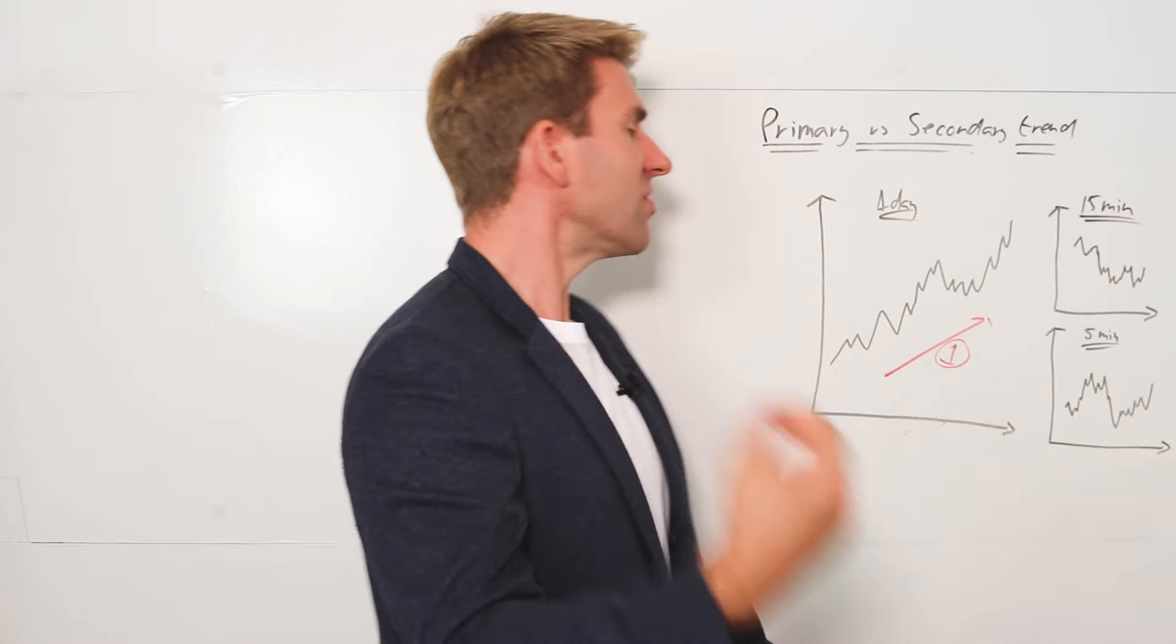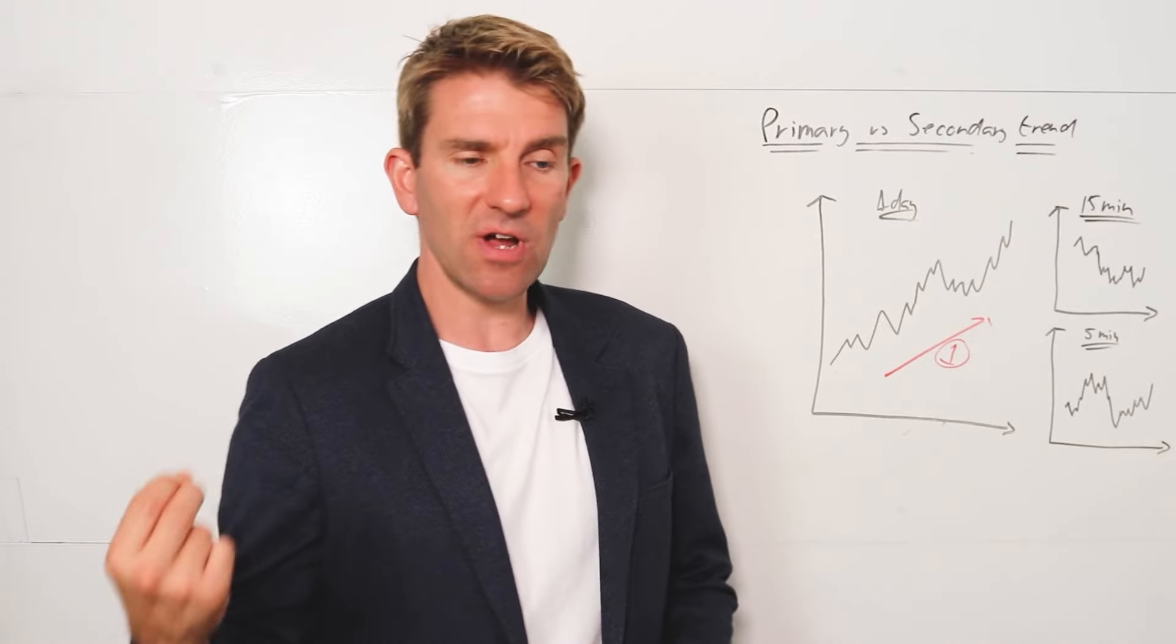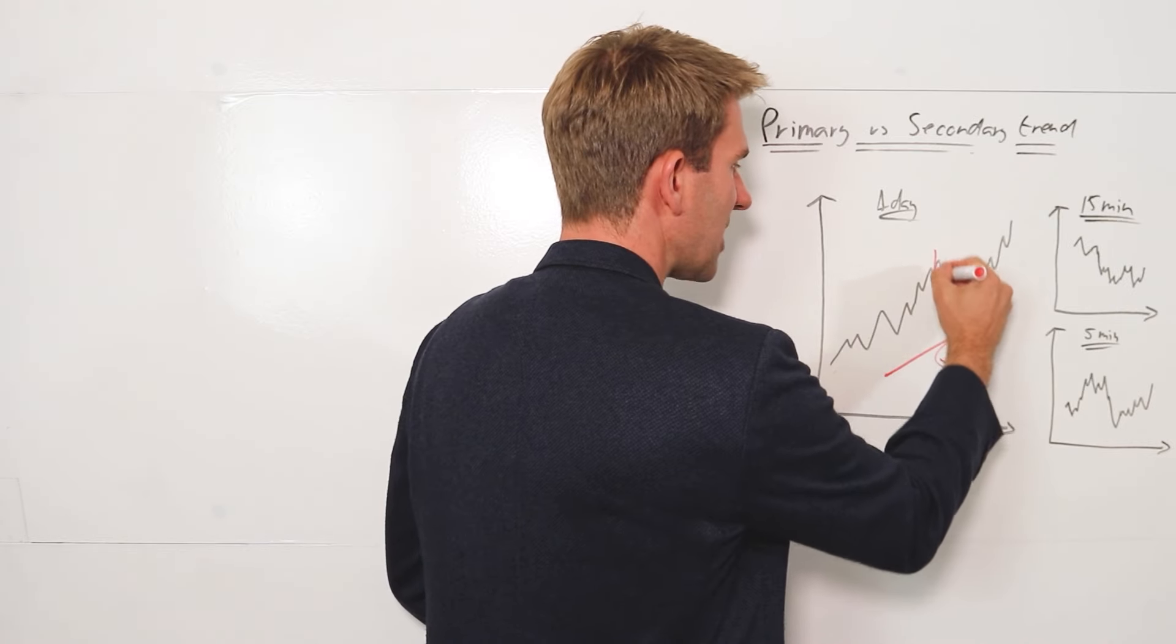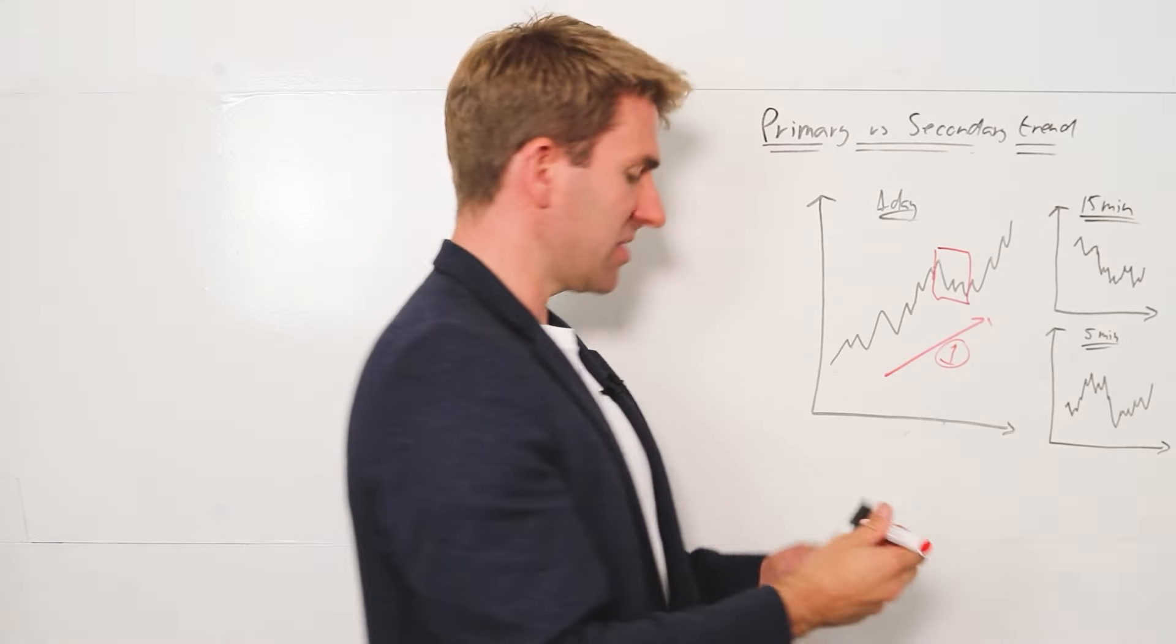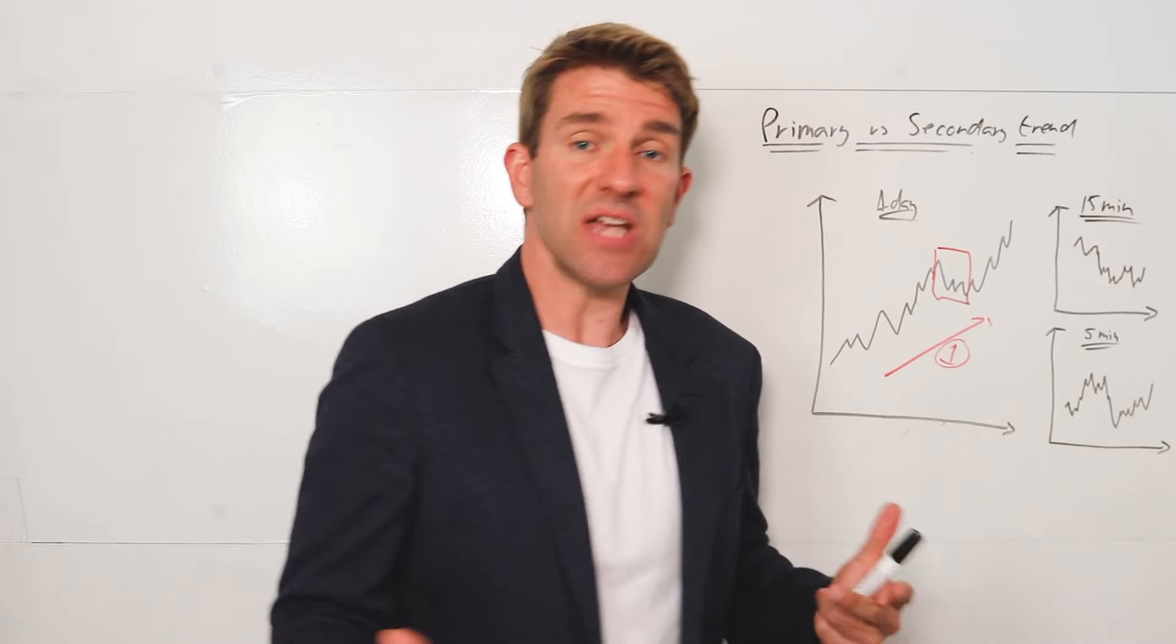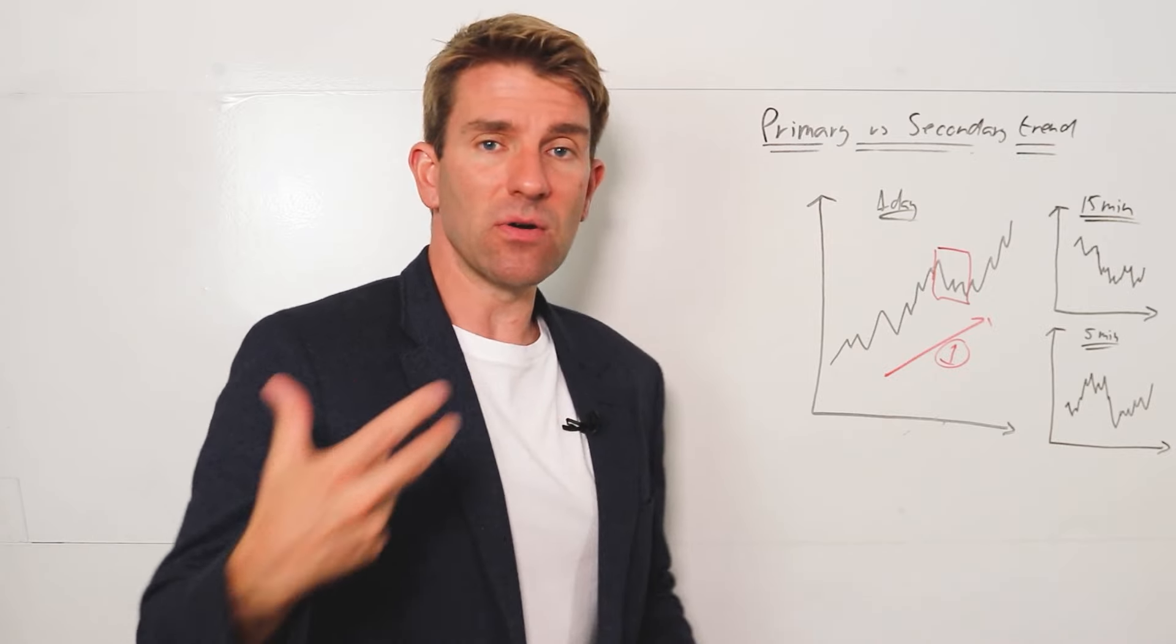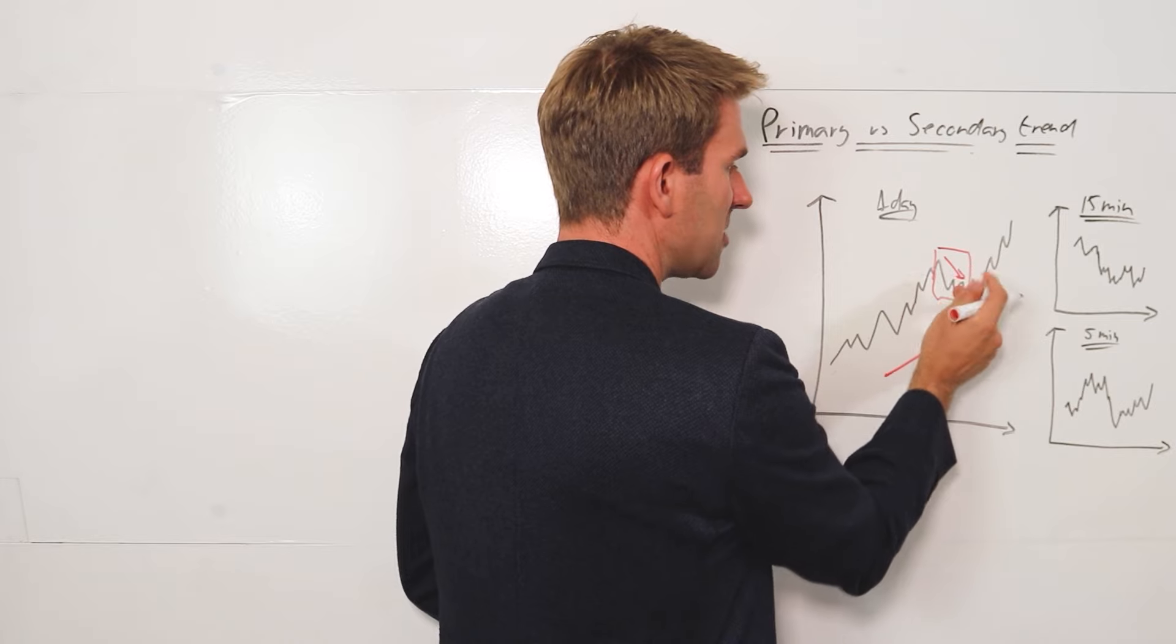But now we have secondary trends, and a secondary trend is something that is occurring within the major trend. So the secondary trend could be if we looked at this section here—just this section here. And that is, okay, if we're doing a daily chart, that could be ten days worth of trade, right? And so if we zoomed in on a 60-minute or 15-minute, we could say hey, that trend is down.